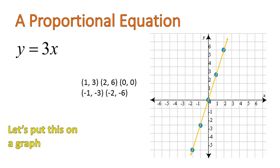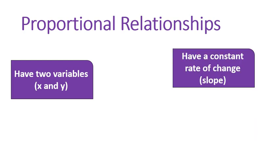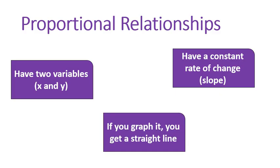So let's do a little bit of vocab. Proportional relationships, or proportional equations, they will have two variables. We usually call them x and y, but you can really call them whatever you want. They'll have two variables that do not have exponents. They will have a constant rate of change. In other words, they will have a constant slope. And if you graph it, you will get a straight line. Those are the characteristics of proportional relationships.